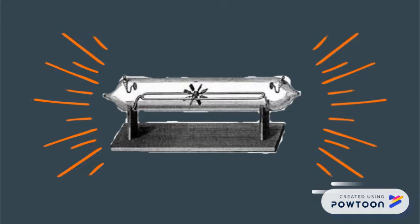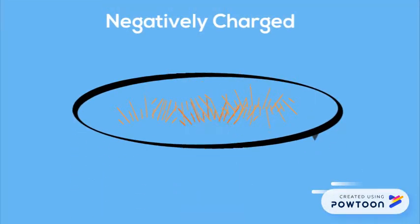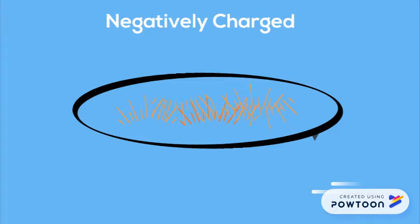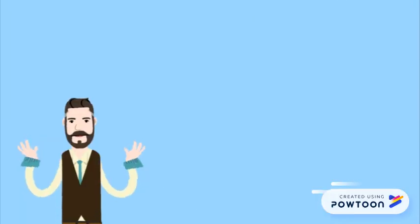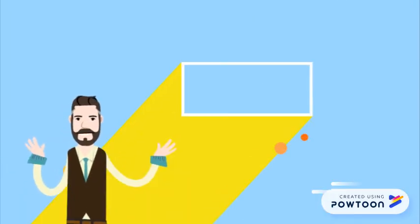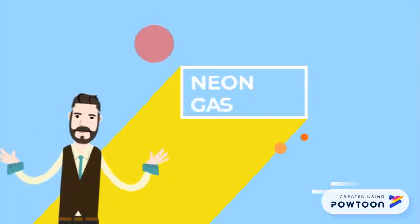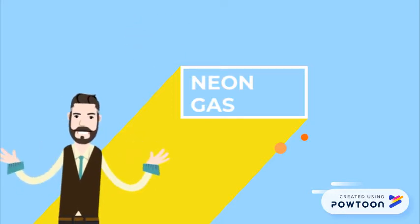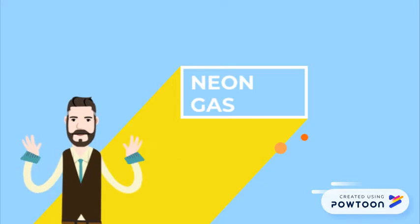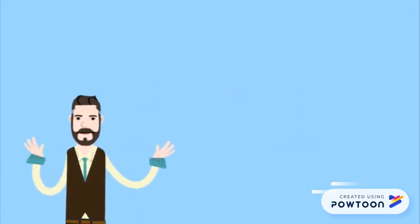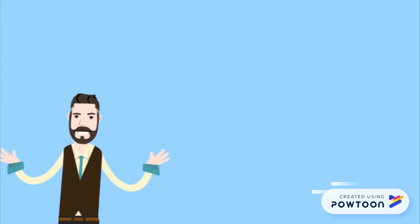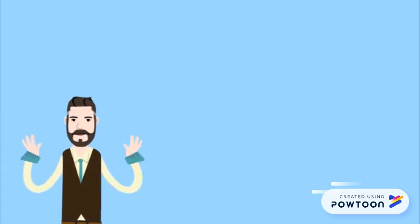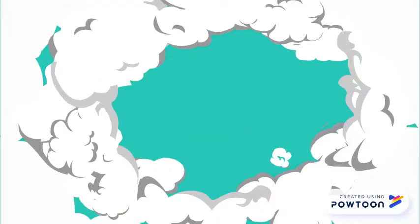Here's what a cathode ray tube looks like. J.J. Thomson demonstrated that cathode rays were negatively charged. In addition to that, he also studied positively charged particles in neon gases. Thomson realized that the accepted model of the atom did not account for negatively or positively charged particles. Therefore, he proposed a model of the atom which he likened to a plum pudding.